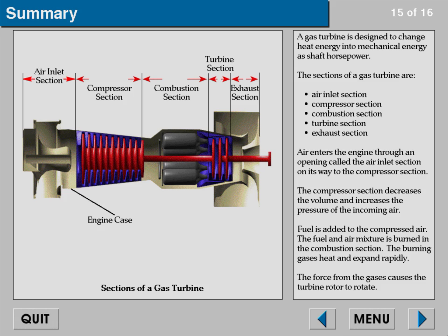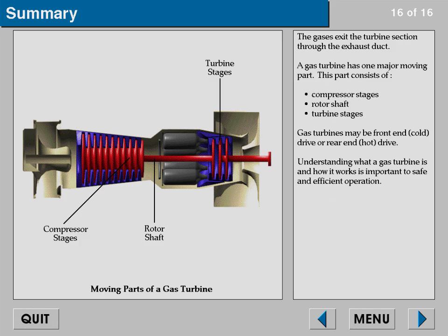Fuel is added to the compressed air and the fuel and air mixture is burned in the combustion section. The burning gases heat and expand rapidly; the force from the gases causes the turbine rotor to rotate. The gases exit the turbine section through the exhaust duct. A gas turbine has one major moving part consisting of compressor stages, rotor shaft, and turbine stages. Gas turbines may be front end cold drive or rear end hot drive.